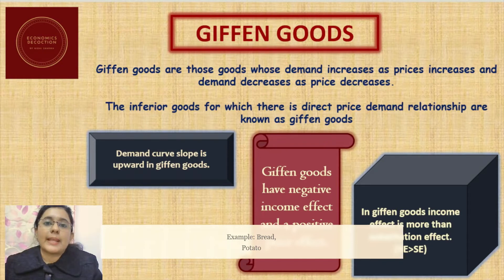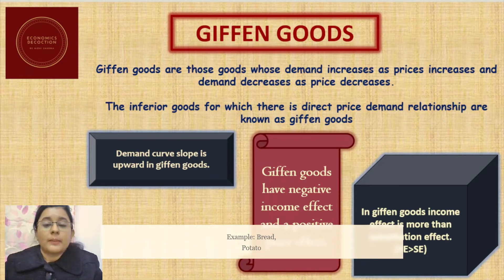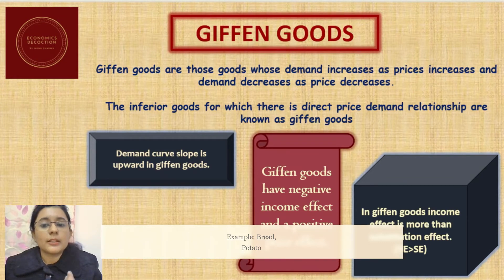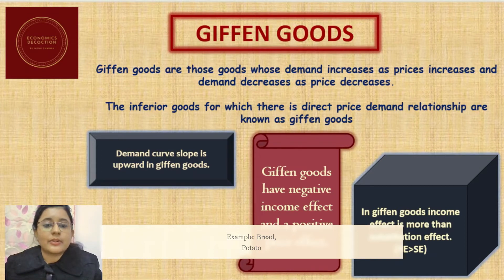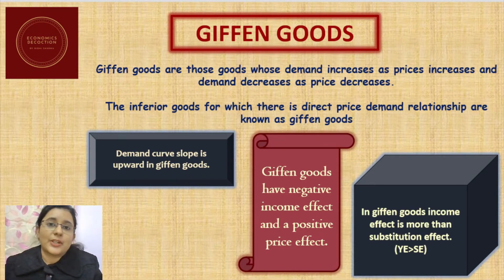The law of demand shows a negative relationship between price and quantity demanded. But Giffen goods are an exception — their demand increases when the price is high and decreases when the price is low. Inferior goods for which there is a direct price-demand relationship are known as Giffen goods. The demand curve for a Giffen good would be upward sloping, with a positive slope. Giffen goods are clearly an exception to the law of demand.